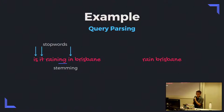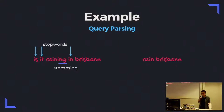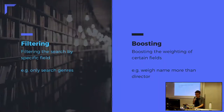Here's an example of query parsing. For the query 'is it raining in Brisbane?' we would remove stop words — 'is,' 'it,' and 'in' — and by doing stemming we remove the '-ing,' so we get the query 'rain Brisbane.' For people who do a lot of searching, this is actually what we tend to type. It's funny because tech-savvy people or computer scientists will skip steps and just type in some nouns — which is essentially what query parsing is doing for us automatically.